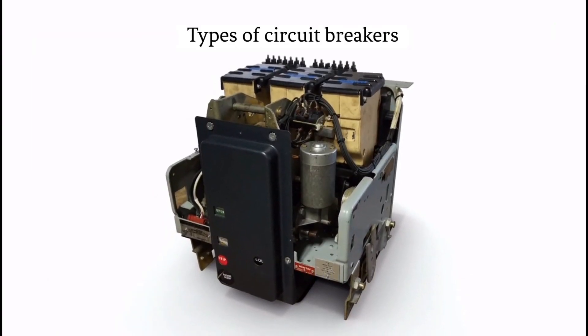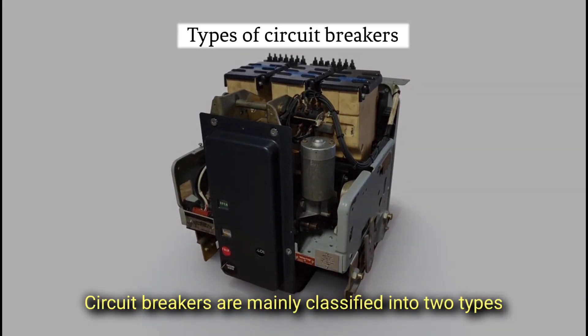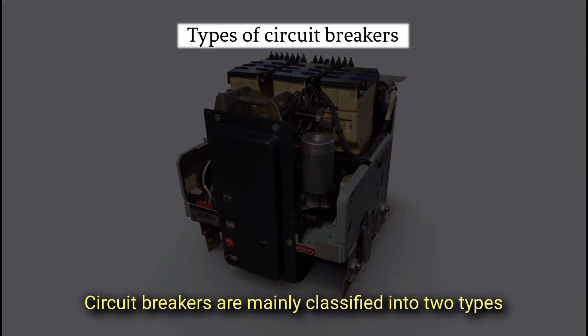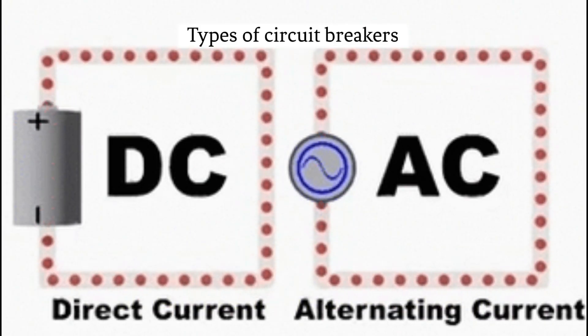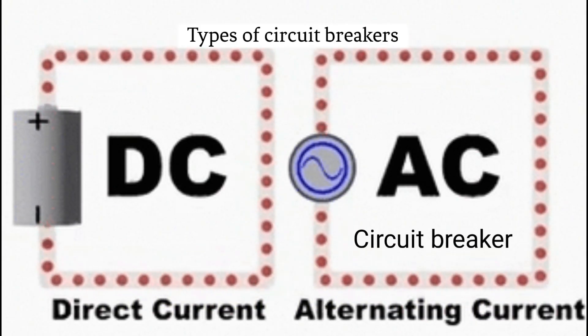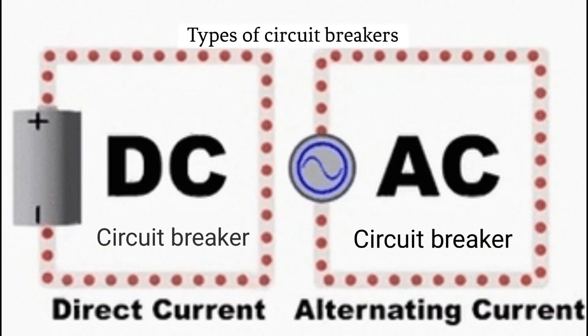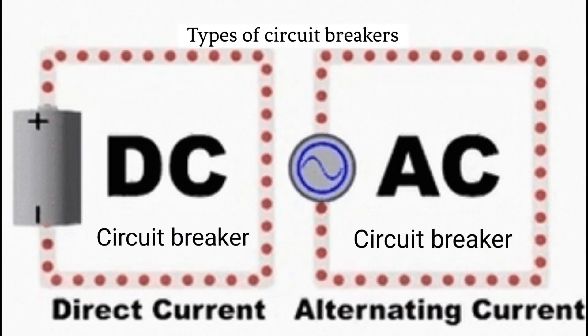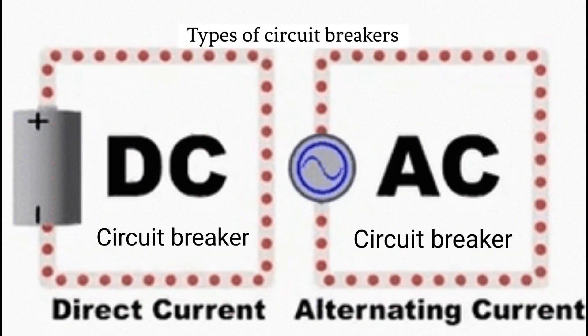Types of circuit breakers. Circuit breakers are mainly classified into two types: one, alternating current circuit breakers; two, direct current circuit breakers.